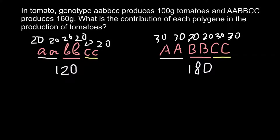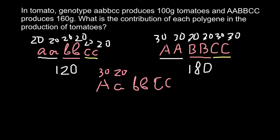So now it's very easy to find different combinations. For example, if the genotype is capital A small a, small b small b, and capital C capital C: that gives 30 grams, 20 grams, 20 grams, 30 grams, and 30 grams. So 50 plus 40 is 90, plus 60 is 150 — a plant with this genotype would produce fruits weighing 150 grams.